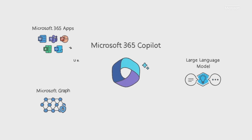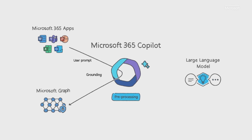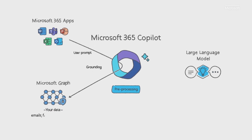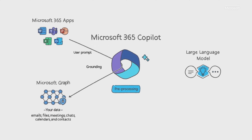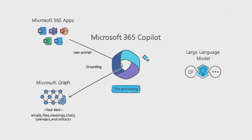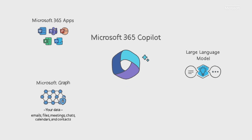It starts with a prompt from you through an app, which Copilot pre-processes through an approach called grounding. Put very simply, grounding improves the quality of the prompt so you get answers that are relevant and actionable.